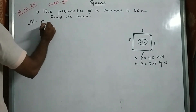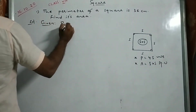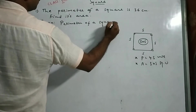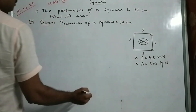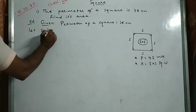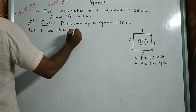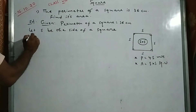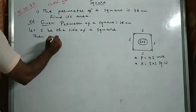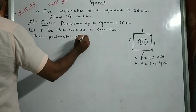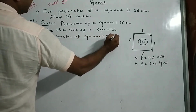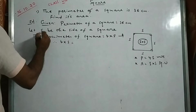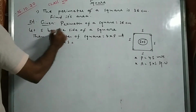What is given here? Perimeter is given — perimeter of a square is 36. We know the perimeter formula. Let S be the side of a square. Then perimeter of square is 4 into side units. Therefore, 4 into side is equal to 36.